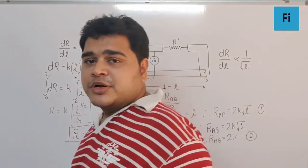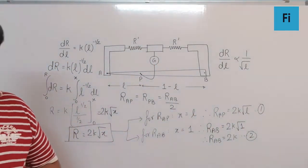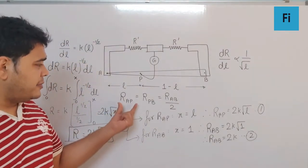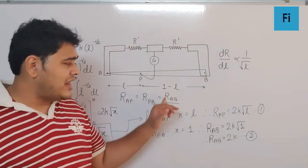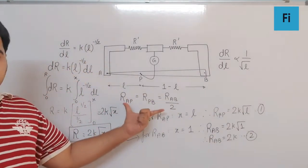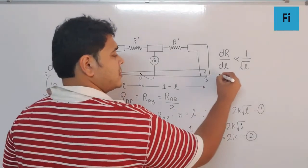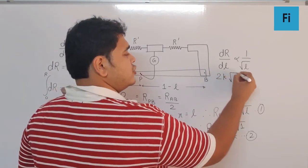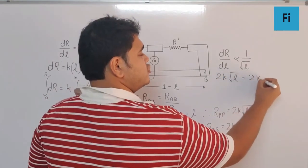That's my equation number 2. We already have the relation between R_AP and R_AB as R_AP = R_AB/2. So substituting equations 1 and 2 in this relation, we get 2k√L = 2k/2.